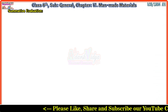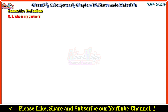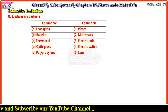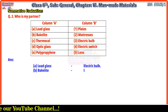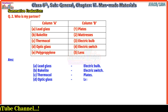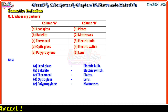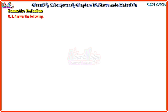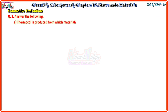Question 2 - Who is My Partner? Here are two columns A and B. Answers: A - Lead glass pairs with electric bulb; B - Bakelite pairs with electric switch; C - Thermocol pairs with plates; D - Optic glass pairs with lens; E - Polypropylene pairs with mattresses.